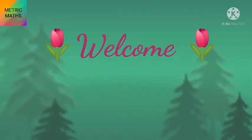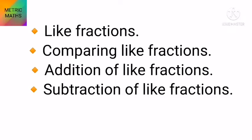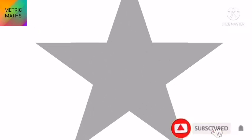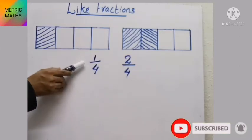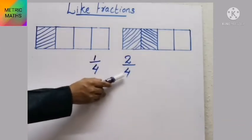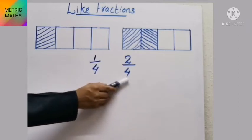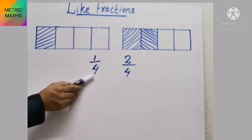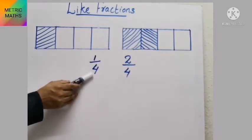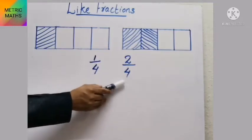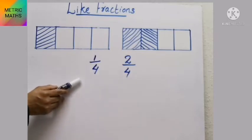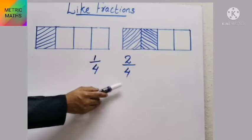Hello everyone, welcome to my math class. Today we are discussing the topic of like fractions. Let's see what like fractions are. Look at these fractions: the first fraction is 1 by 4 and the second fraction is 2 by 4. Look at the denominators — both fractions have the same denominator, 4. So fractions that have the same denominators are called like fractions.